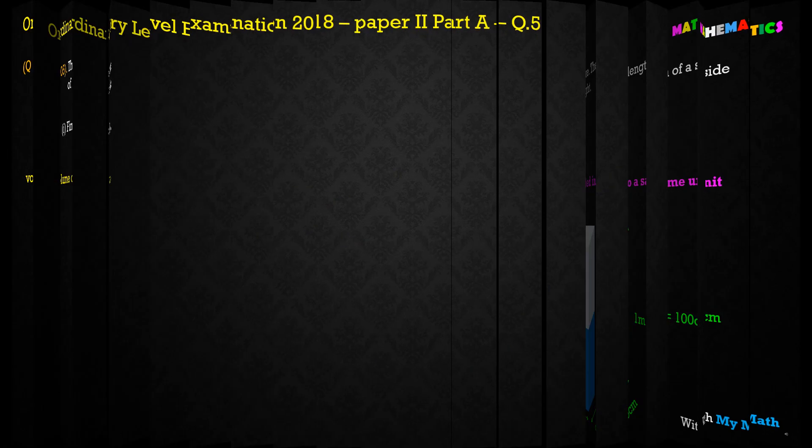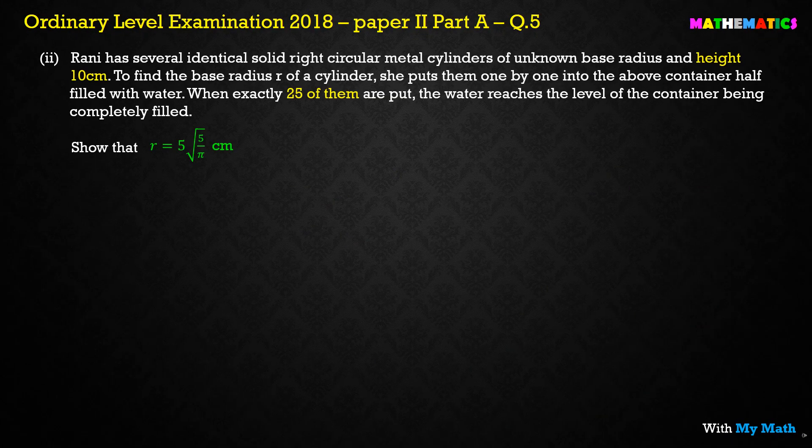The second question: Ran has several identical solid right circular metal cylinders of unknown base radius and height 10 centimeters. To find the base radius r, she puts them one by one into the above container, which is half-filled with water. When exactly 25 of them are put in, the water reaches the level of the container, completely filling it. We need to show an equation with r as the subject.